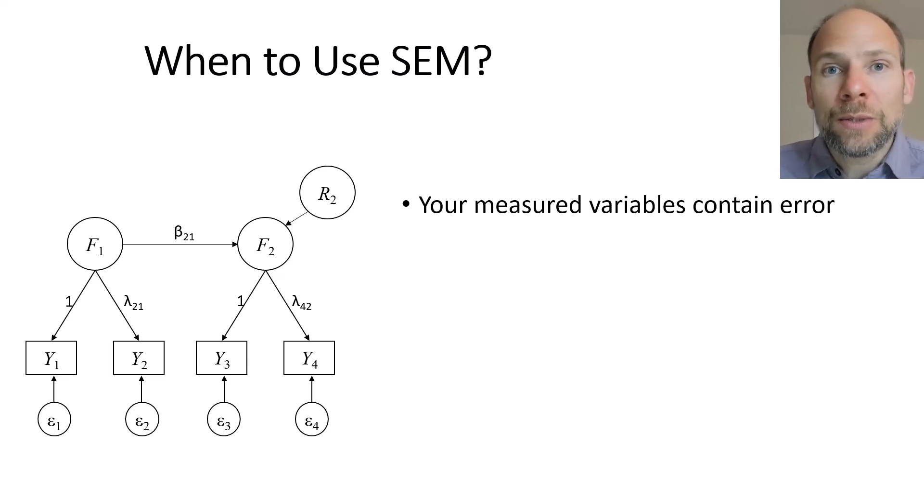There are some variables for which it's pretty reasonable to assume that they are measured without error or nearly without error, such as, for example, age or gender or other variables like experimental condition, when you know which condition somebody was in. Then there may be little error in those variables. And then those might be treated as simply observed variables. And then you don't necessarily have to have a structural equation model for that.